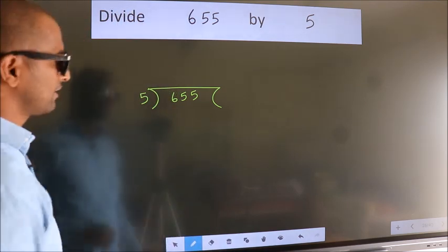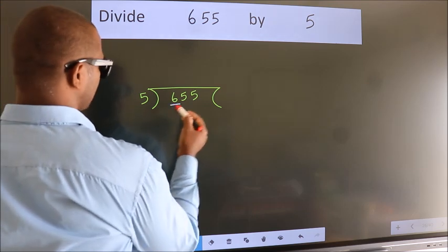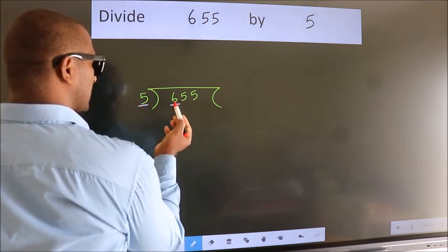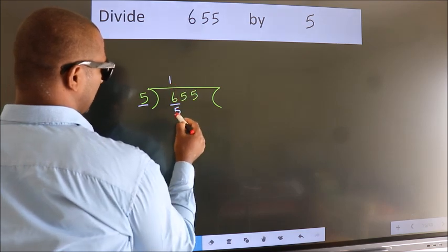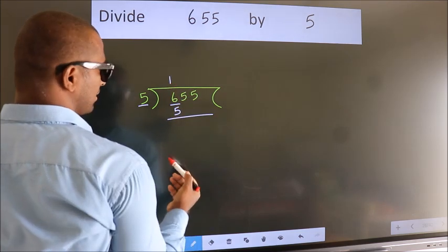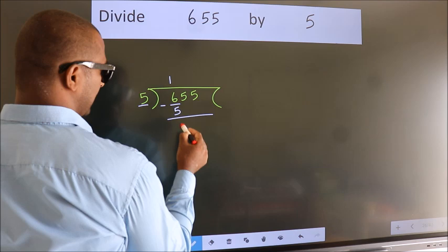This is your step 1. Next, here we have 6, here 5. A number close to 6 in the 5 table is 5 once 5. Now we should subtract. We get 1.